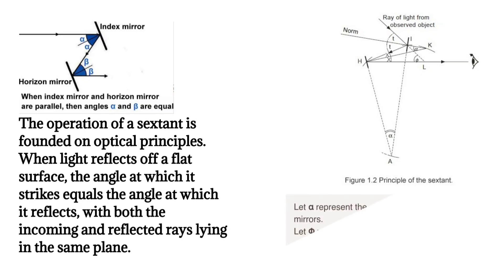If light is reflected twice by two mirrors in this plane, the angle between the incoming ray and the final reflected ray will be twice the angle between the mirrors.